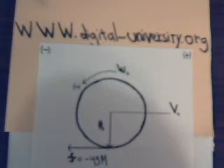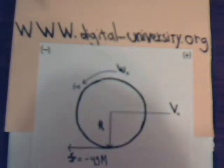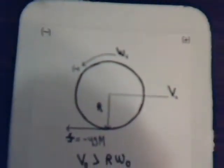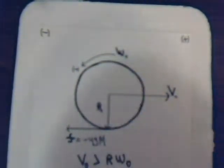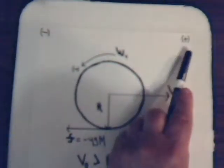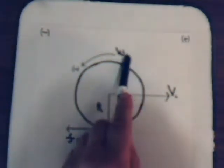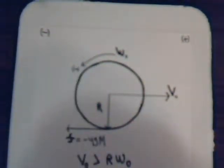What we're going to do in this video and in the next several videos is consider the motion — it could be of a billiard ball or a bowling ball, the physics would be exactly the same — where it has a backspin to it. So it has a velocity going in the forward direction, but its angular velocity is in the opposite sense.